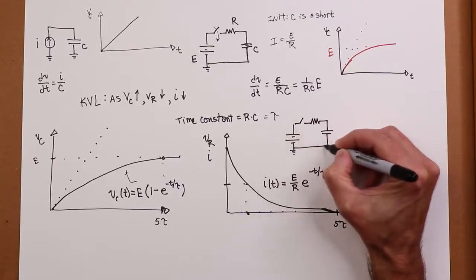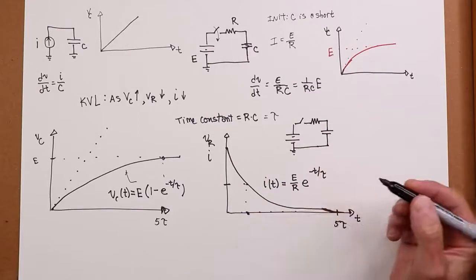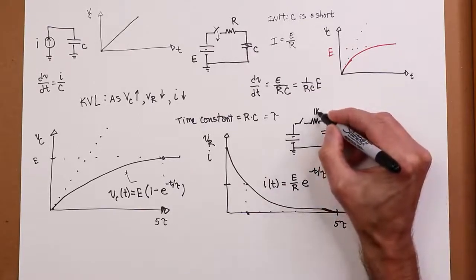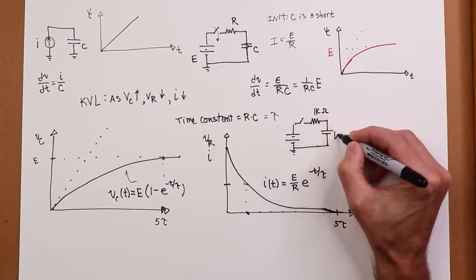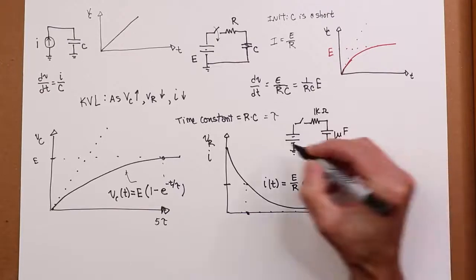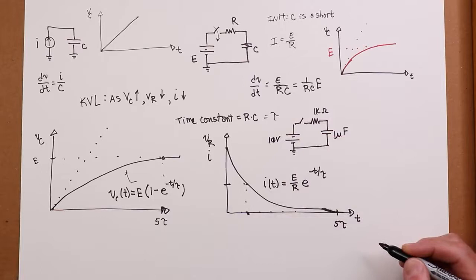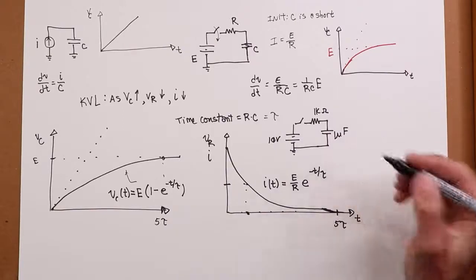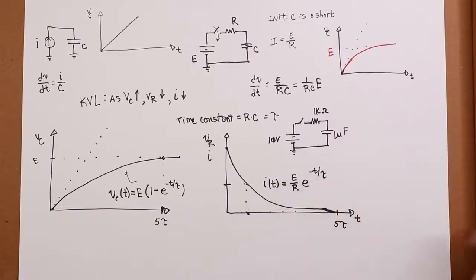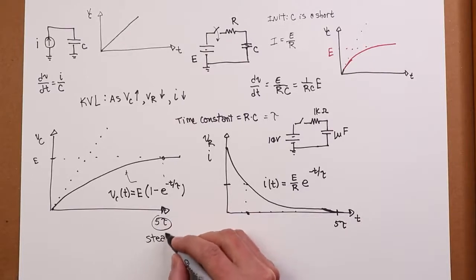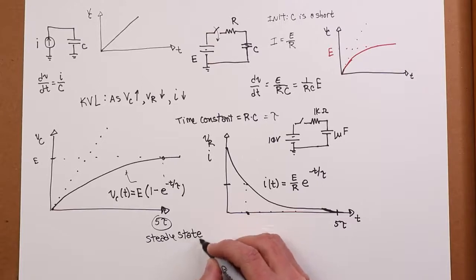Let's say this is just like our original. So let's say we have 1k ohm over here, and I have a 1 microfarad capacitor. Maybe that's 10 volt source. So one question would be, how long does it take to get to steady state? What is steady state? Steady state is always 5 tau. 5 tau always. That's the definition for steady state for these kinds of circuits. Always 5 tau.